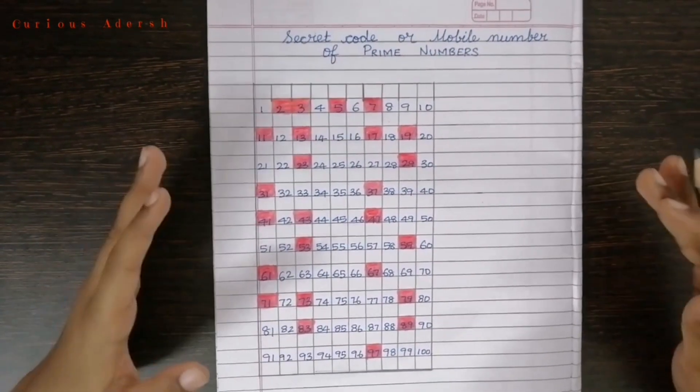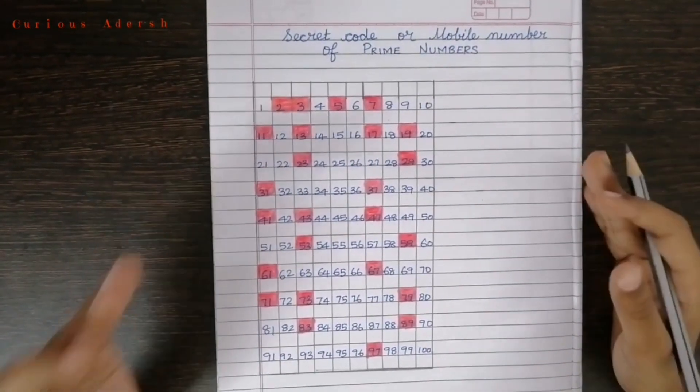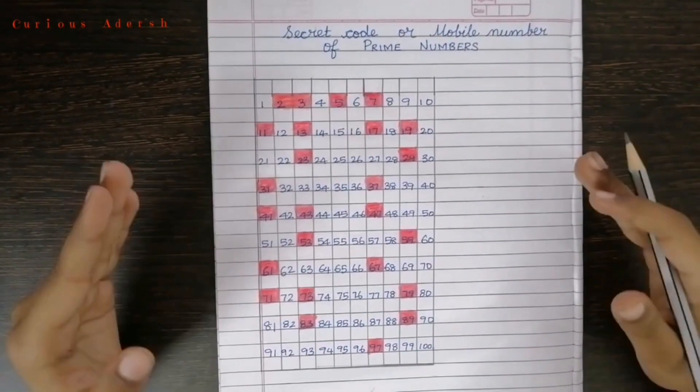Let's find the mobile number of the prime numbers. You may ask me why are we finding the mobile number? Because this simple trick helps us to memorize the prime numbers.